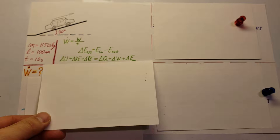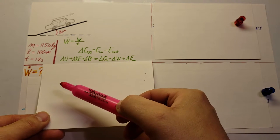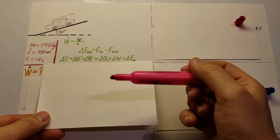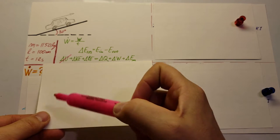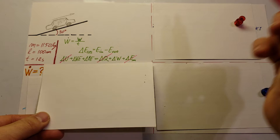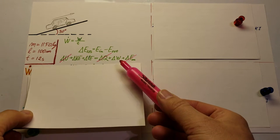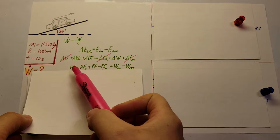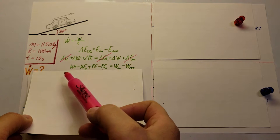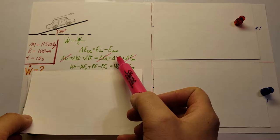Looking at our situation: the car is moving so we have kinetic energy; it's going up a hill so we have potential energy; and it needs to do work to go up. Internal energy of the system won't change, so we cross that out. There's no heat transfer and no mass energy transfer, so those are crossed out too. Our change in KE is KE_final minus KE_initial, and PE is PE_final minus PE_initial.